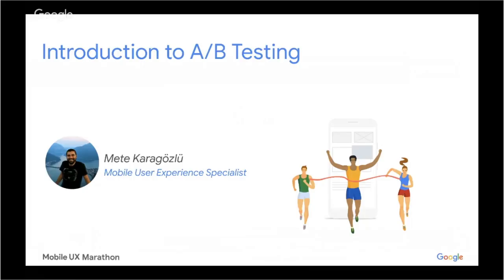Before I begin, I'd like to introduce myself. My name is Mete. I work on the Mobile UX team at Google for the last one year. Before that, I was working as a product manager and UX lead. Overall, I have five years of experience in A/B testing, where I've run more than 500 A/B tests.